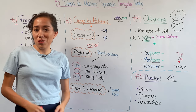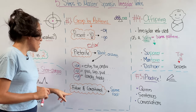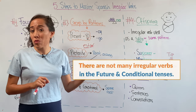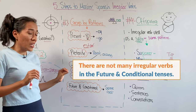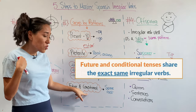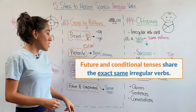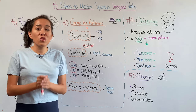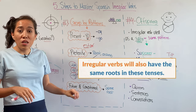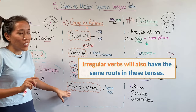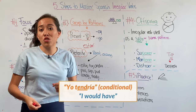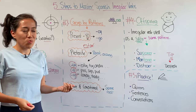What about the future and the conditional? I have great news for you. The future and the conditional tenses have very few irregular verbs. And better news — the irregular verbs in the future tense are also going to be irregular in the conditional tense, which means you're going to use the same irregular roots for both tenses. You're only going to change the endings. For example: yo tendré, yo tendría. Pretty easy, right?